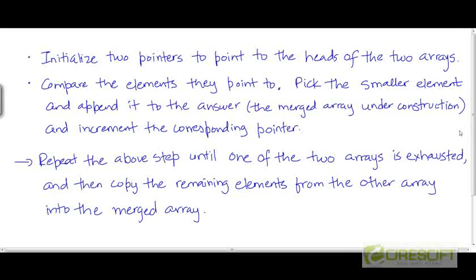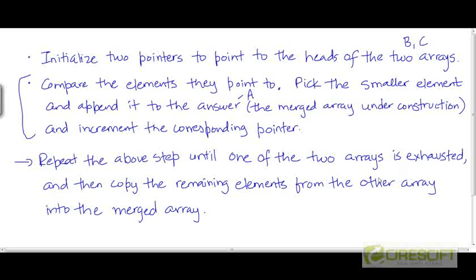Here is a description of the procedure we just saw. We initialize two pointers to point to the heads of the two arrays B and C. Then we compare the elements the pointers point to, pick the smaller element, and append it to the answer list A — the merged array currently under construction. We then increment the corresponding pointer. We repeat this step until one of the two arrays is exhausted, at which point we simply copy the remaining elements from the other array into the merged array A.